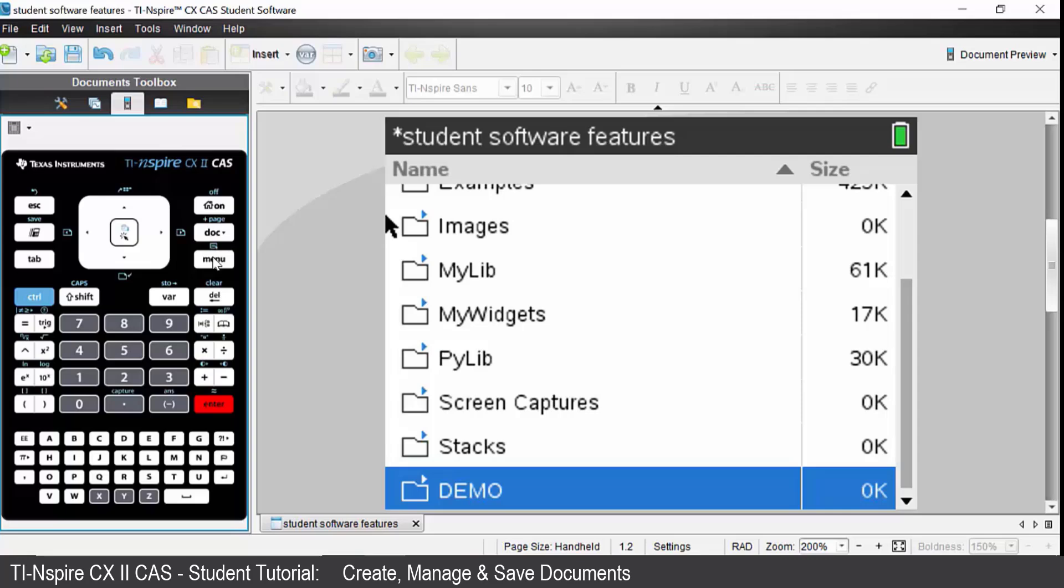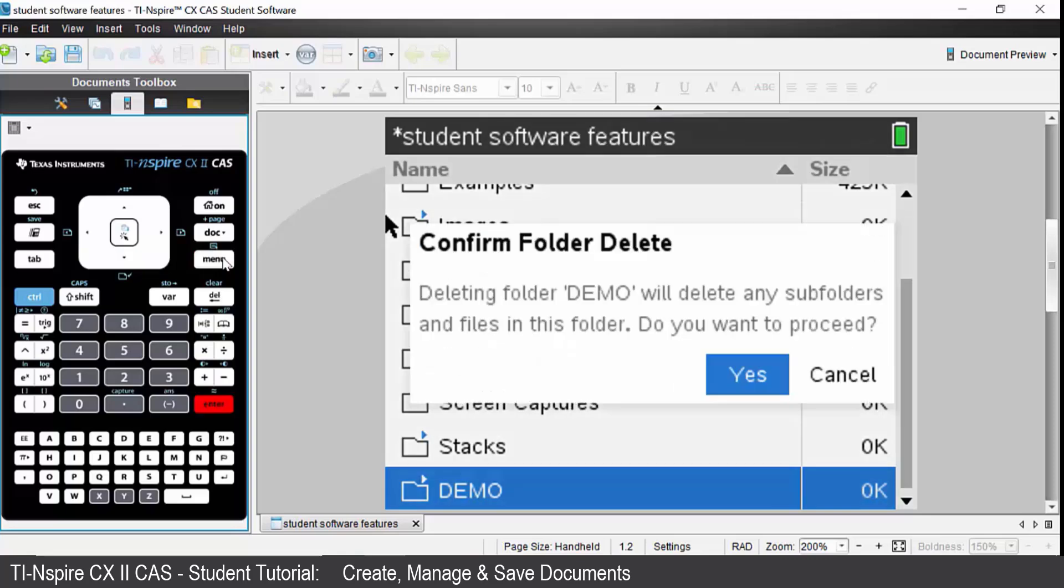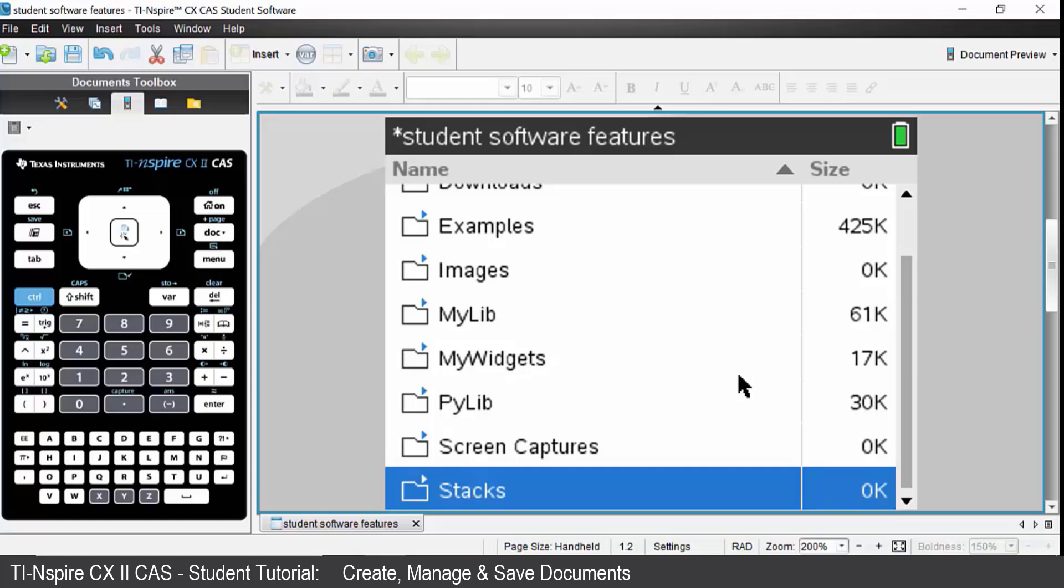If you want to remove that folder, press control followed by menu. Come down to delete option 6. Confirm folder delete. Yes, I do want to delete it. And that folder is now deleted.